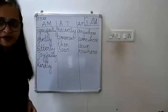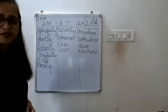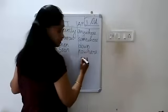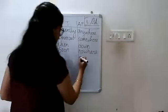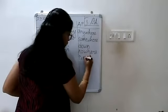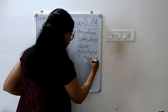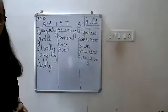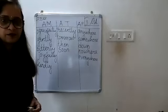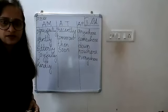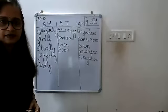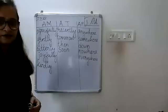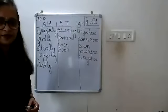Next word is 'everywhere' — adverb of place. Very good. Under adverbs of place, write 'everywhere' — E-V-E-R-Y-W-H-E-R-E.